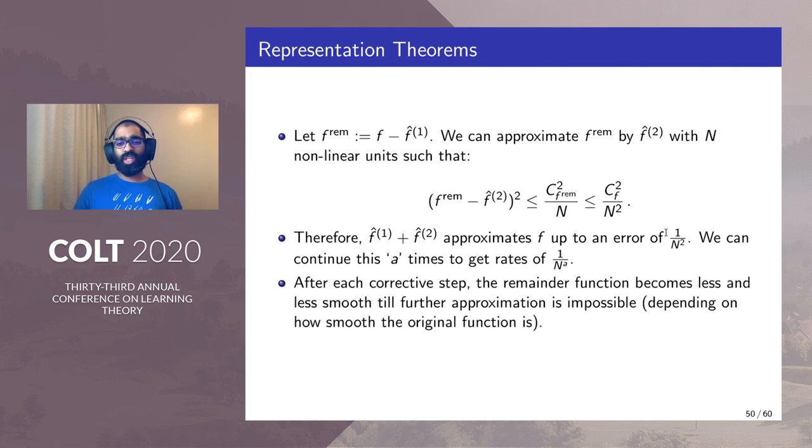After each corrective step the reminder function becomes less and less smooth till further approximation is impossible and this depends on how smooth the original function is and given we have θ(a·d) bounded derivatives we can do this a number of times.